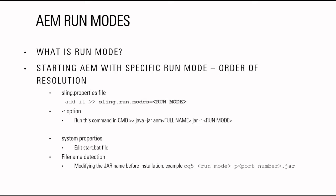The third option is a sling.properties file inside the configuration folder — you can add the line sling.run.modes and then specify the run mode. The fourth option is via command line: you execute Java -jar and then the AEM jar name, and with the -R option you can specify the run mode. This is the order of resolution — so if you've specified a run mode in sling.properties but also try the -R option, it will not take the -R value because priority is given to sling.properties.